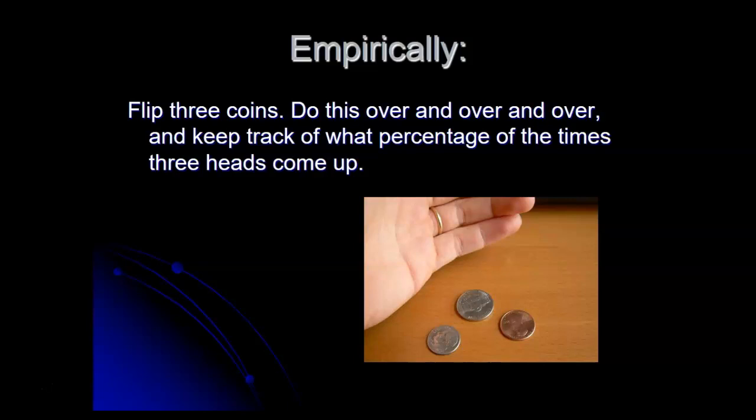So whatever percentage of the time that actually does happen, you can take that as being your probability of it happening on any given time that you toss the three coins. So that's one approach to coming up with a probability number.